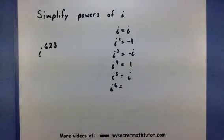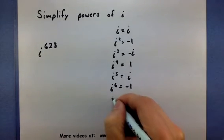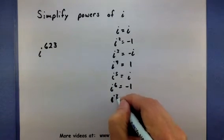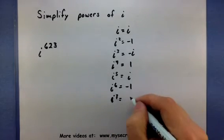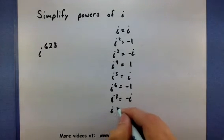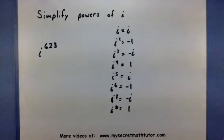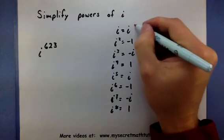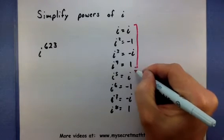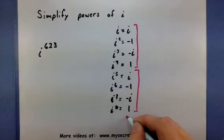So i to the fifth is i. i to the sixth is negative 1. i to the seventh would give me a negative i. And i to the eighth gives me a 1. So again, you can see that pattern of four numbers just repeats. And it continues on like this.